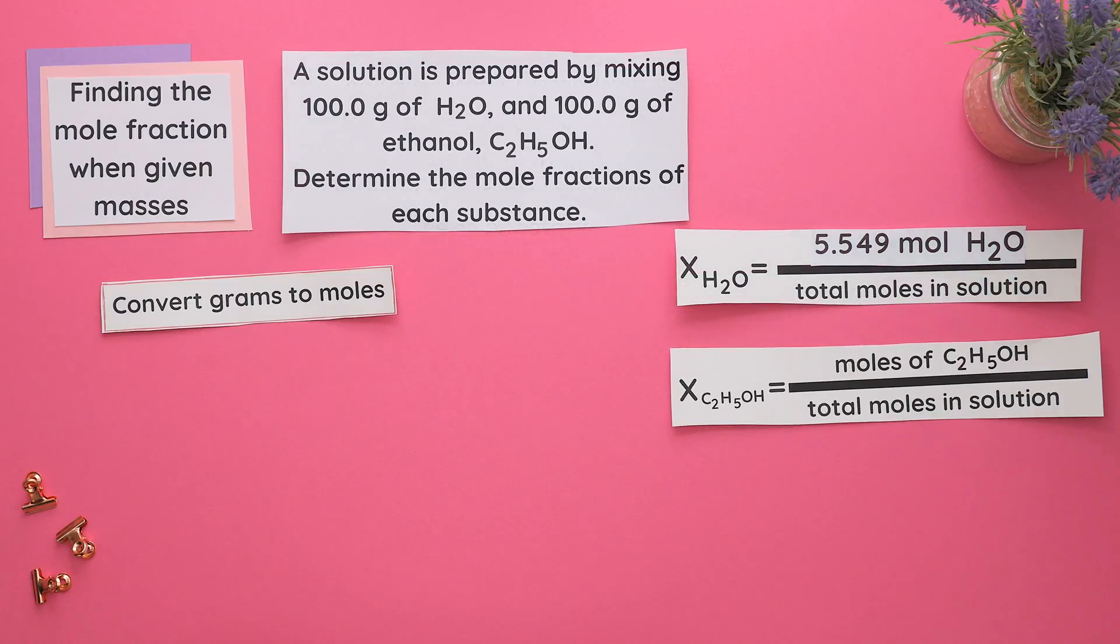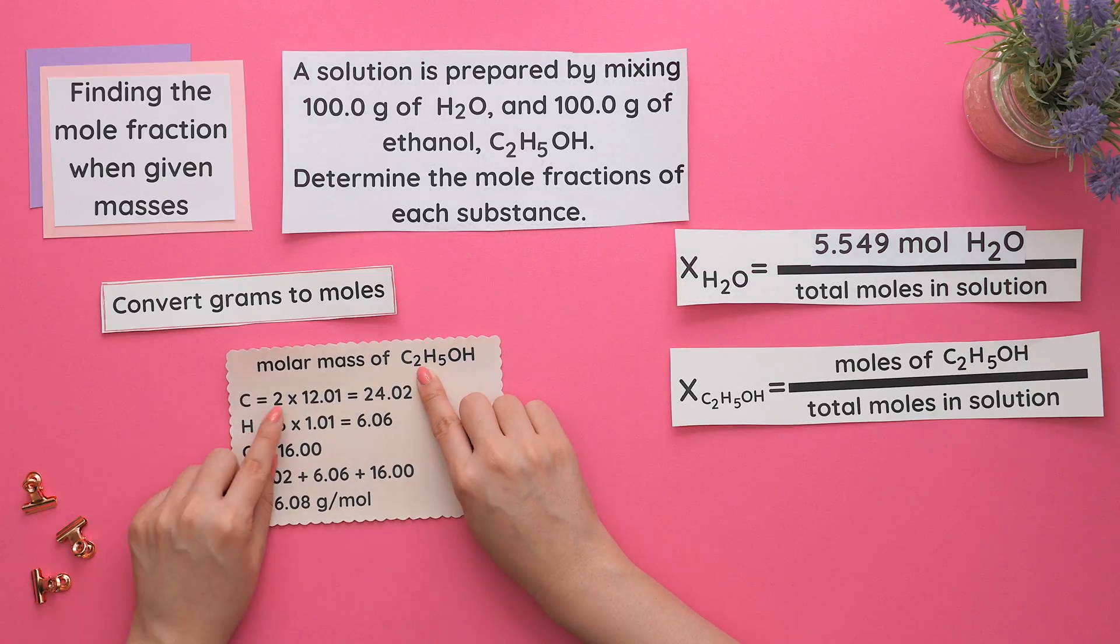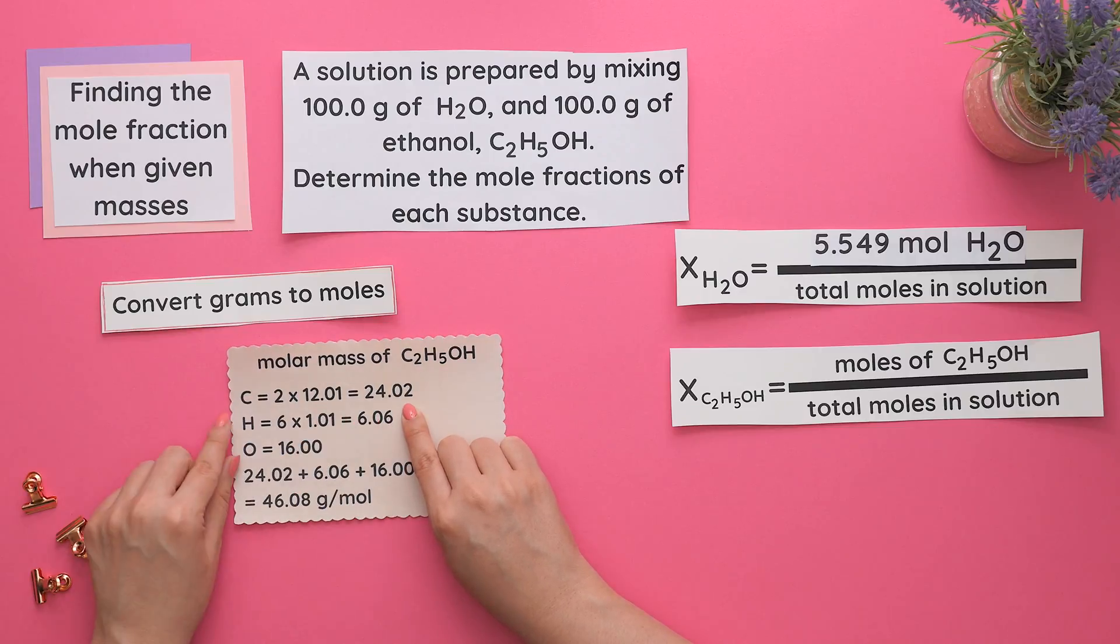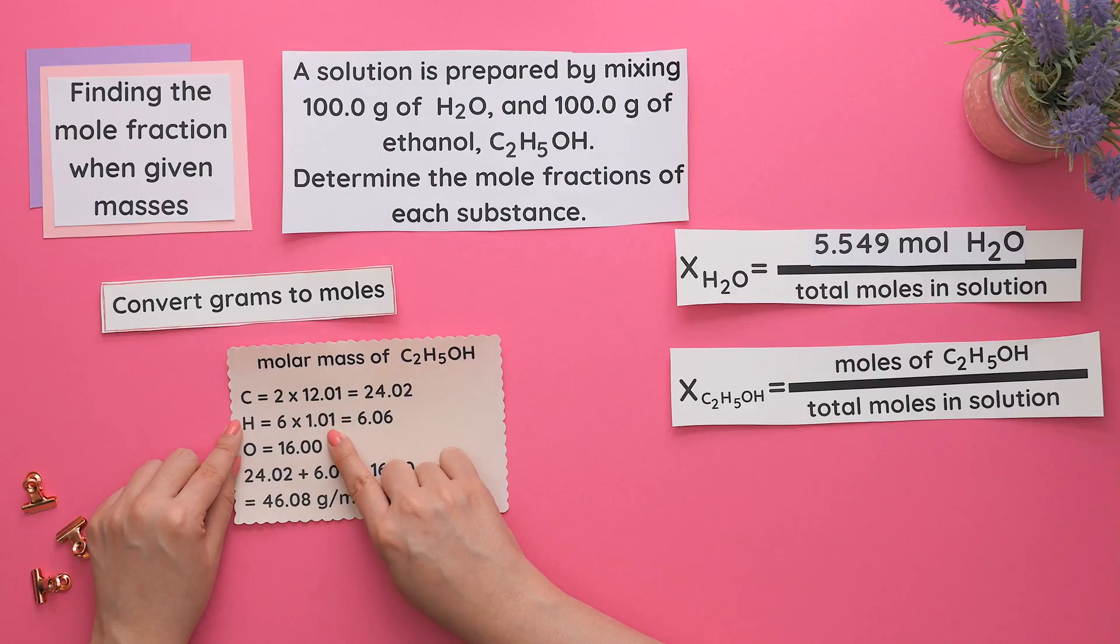Now let's find the molar mass of ethanol. There's two carbons. Multiply two by the mass of carbon and we get 24.02. For the hydrogens, we have six. Multiply that by the mass of hydrogen and we get 6.06. There's only one oxygen, so our mass is 16.